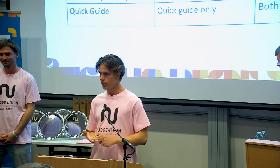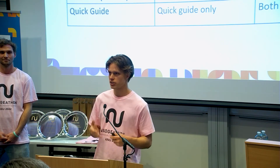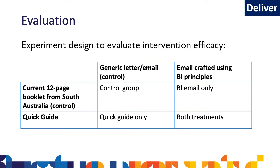On to the fourth and final D — Delivery. We see evaluation of these interventions as central to delivery, so you can actually measure the impact of what's happening — otherwise, what's the point? You can spend money and time on something without knowing if you're having an impact. We've developed our interventions with a randomized controlled trial in mind. Within this, we'll have a control group with neither the quick guide nor the behavioral letter — just the 12-page brochure and a generic letter. Then two groups with a mix of one behavioral intervention each, and a final group with both the quick guide and the behavioral letter together, to see if there's an interaction effect between the two.